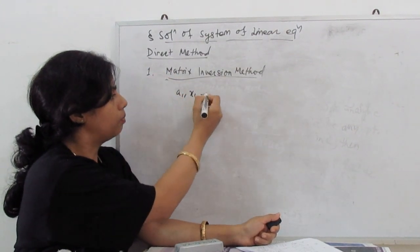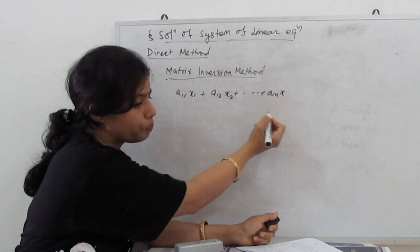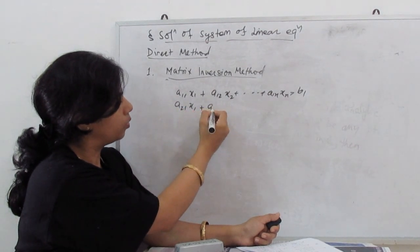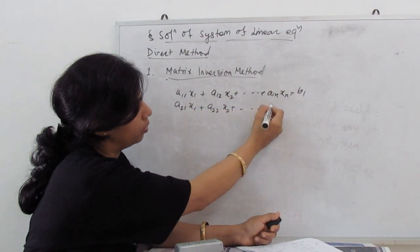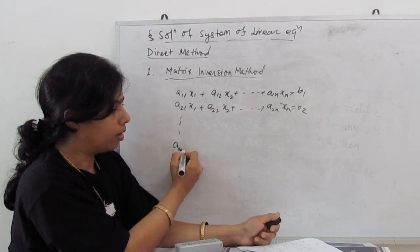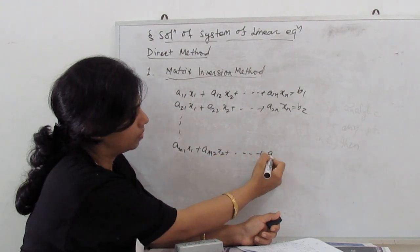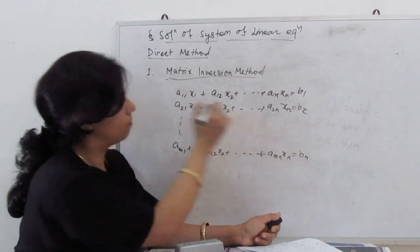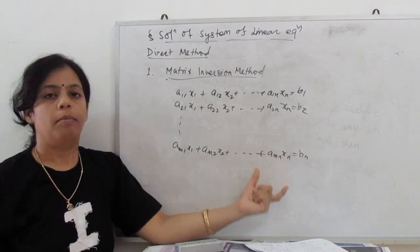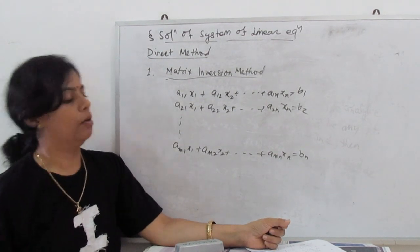If we have any system of equations — a11·x1 + a12·x2 + ... + a1n·xn = b1, a21·x1 + a22·x2 + ... + a2n·xn = b2, and so on up to am1·x1 + am2·x2 + ... + amn·xn = bn — this is our system of linear equations with m equations and n variables. We convert this into matrix form.